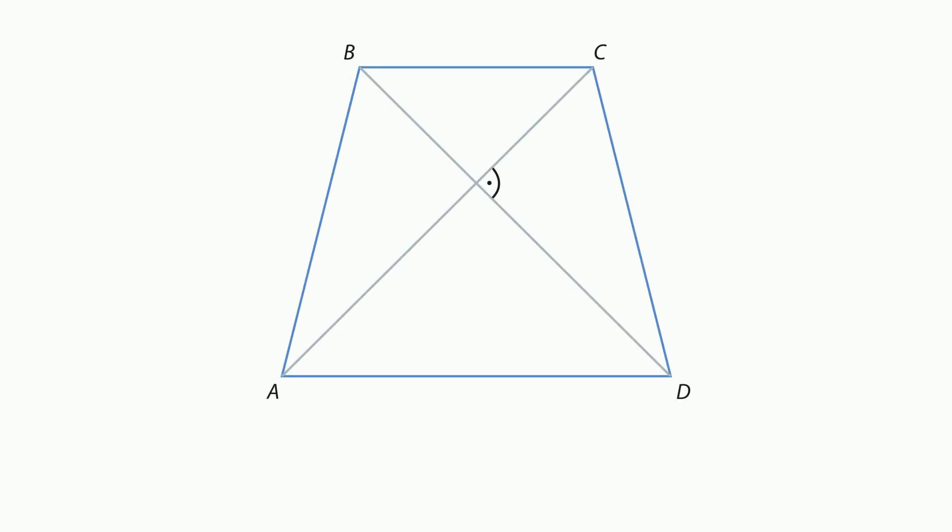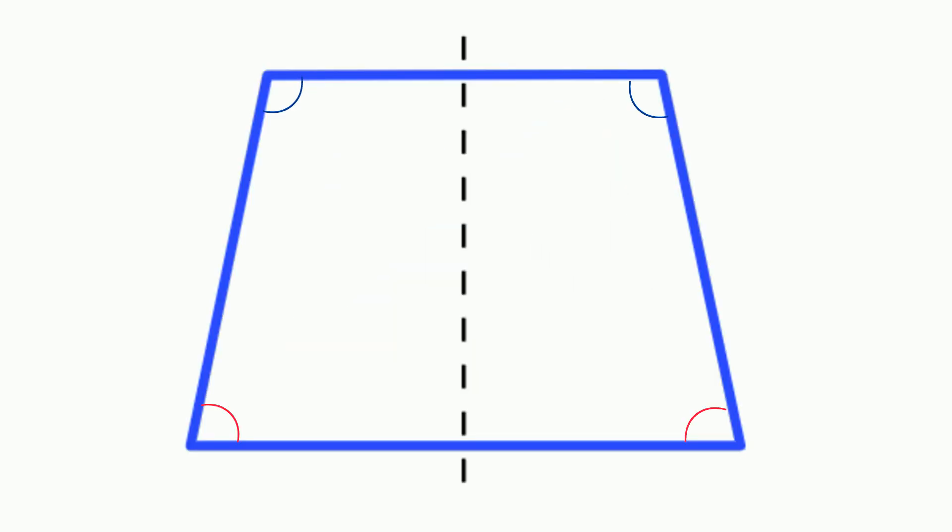The height, which is an altitude, is a line perpendicular from base to base. The angles at the top of the base and the bottom of the base are congruent. Adjacent base angles are supplementary.